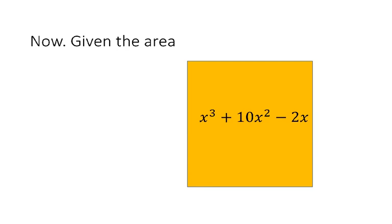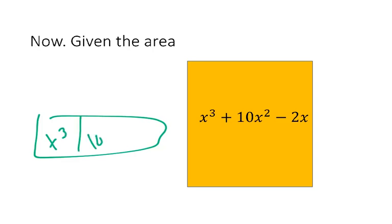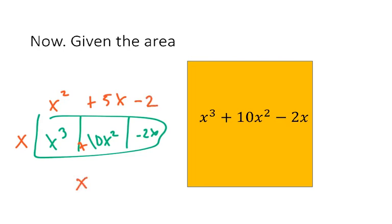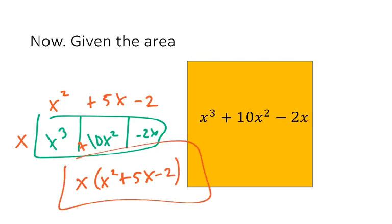This is our last example. Using the area model for x³ + 10x² - 2x, the greatest common factor is x. Finding the other values, the factored form has the GCF out front. Multiplying back through gives us what we started with. That's how you use the area model to help you factor out the greatest common factor.